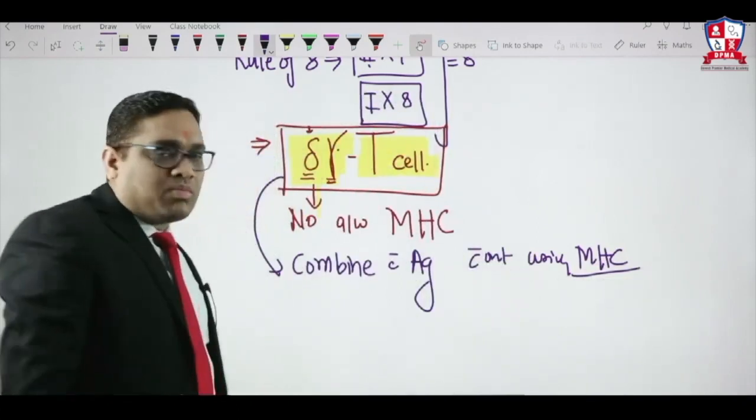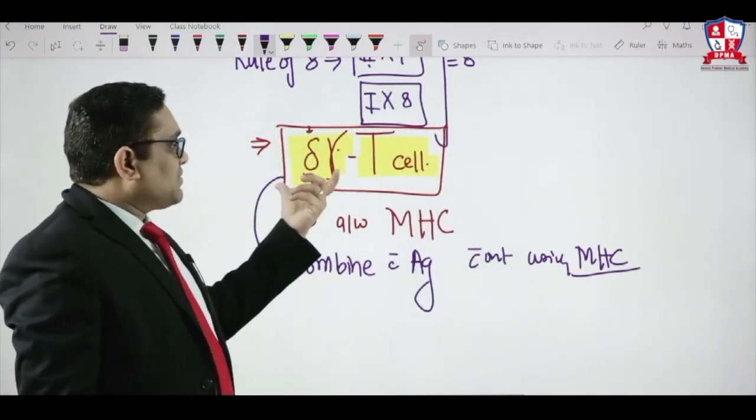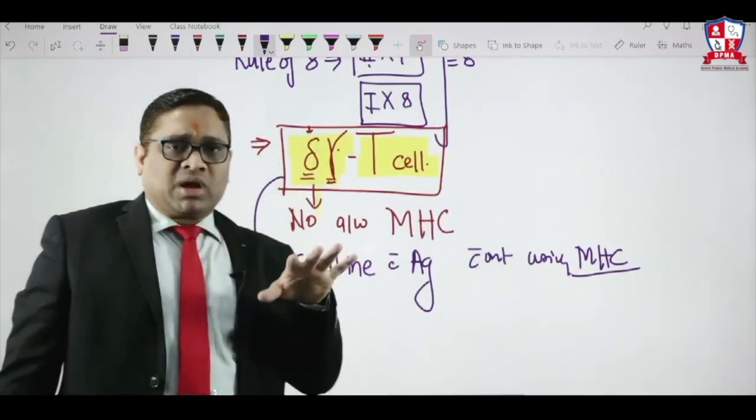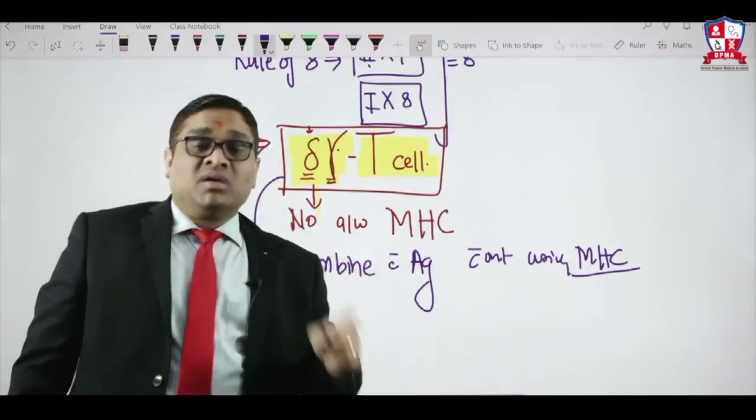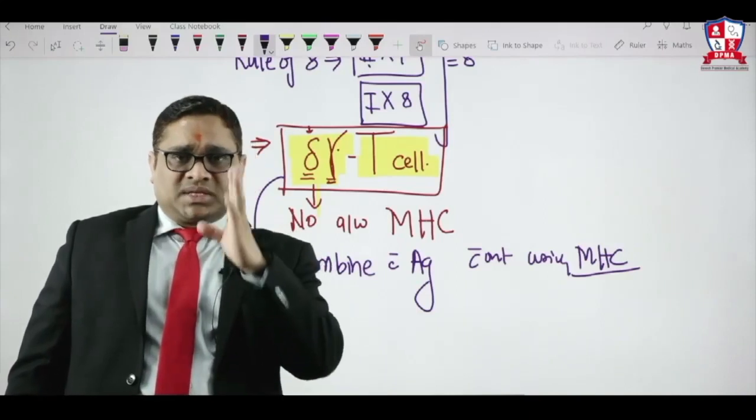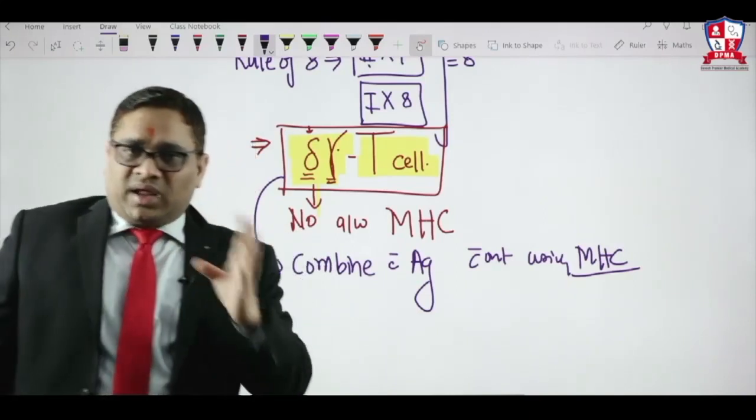None of the MHC complexes will be used because gamma delta receptor will never utilize MHC class 1 or class 2. So they will combine with foreign antigen without help of MHC complexes. That was the answer in AIIMS exam.